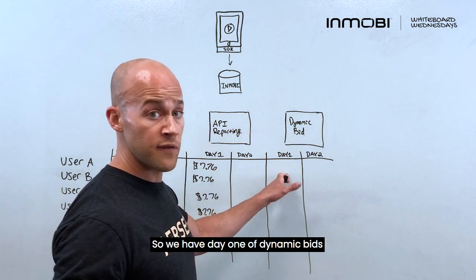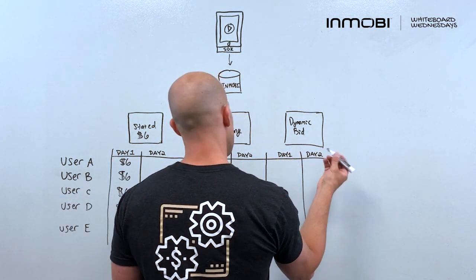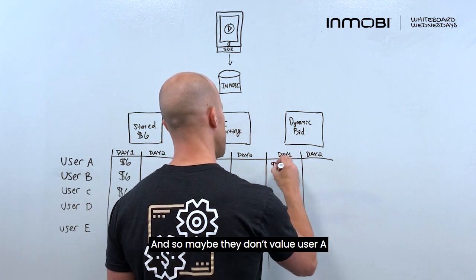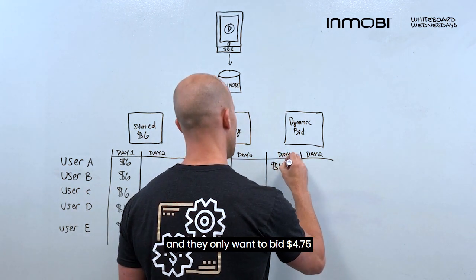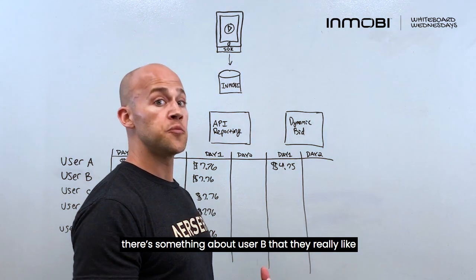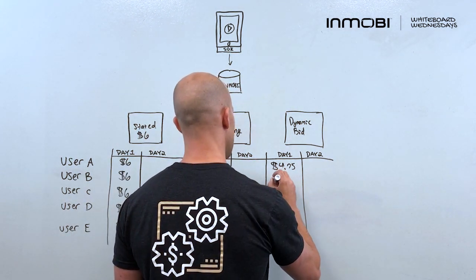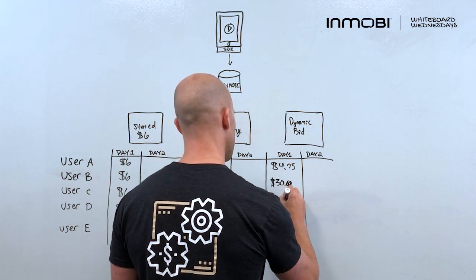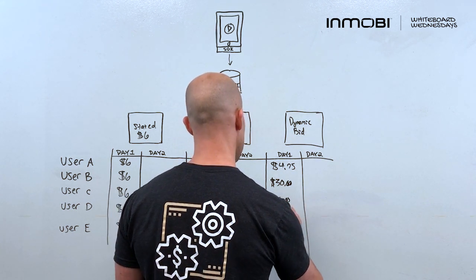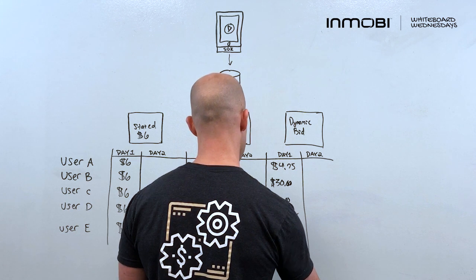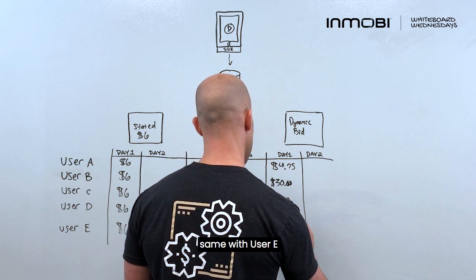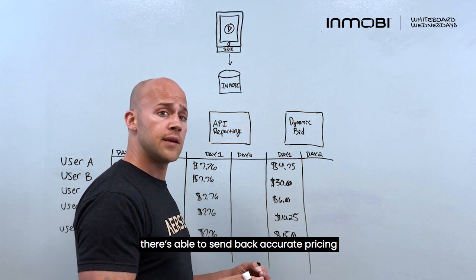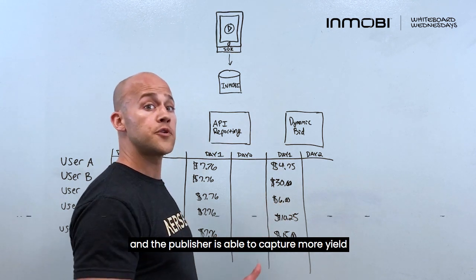Let's look at the dynamic bid. On day one of dynamic bids, because they're passing back a dynamic price for each individual auction, the price can change. Maybe they don't value user A and they only want to bid $4.75. But there's something about user B that they really like, so now they're going to bid $30 — they really want to win that impression. User C is somewhere in the middle. User D and user E — they really like those impressions. They're able to send back accurate pricing, they're more competitive within the auction, and the publisher is able to capture more yield.